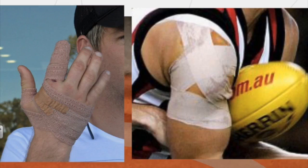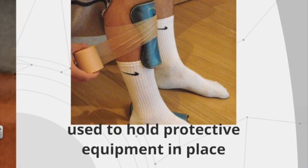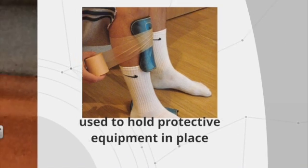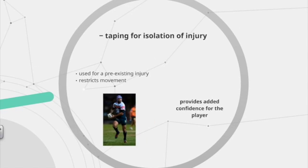In AFL, the shoulder is taped to help prevent players from dislocating their shoulder. Tape can also be used to hold in place sporting equipment that protects the body from injury, such as taping shin pads before a game of football.